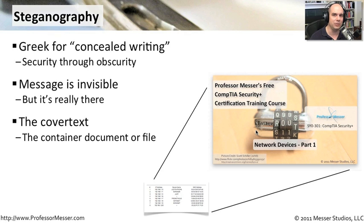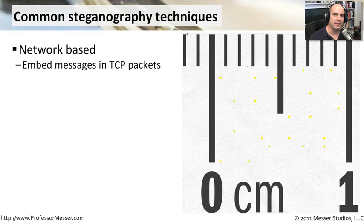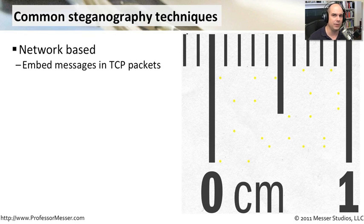That's what makes steganography so interesting — this can be sitting right in front of us the entire time and we would have no idea that it's really there. There are a number of ways you can implement steganography in your environment. One way is to hide the data within the network packets themselves. We can't really see the network packets; they're going by so quickly and there are so many of them. But if you were able to embed just one character inside of a TCP packet as it went from one device to the other, you could send many, many packets.